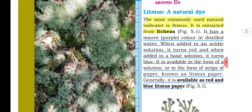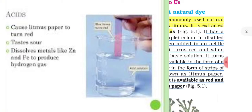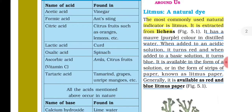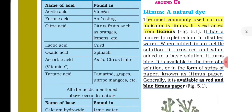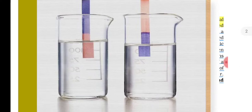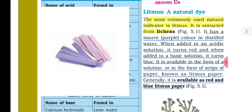When we use litmus paper in a basic solution it turns blue, but when we use it in an acidic solution it turns red — which indicates the substance is acidic. Blue color indicates the solution is basic. Litmus is available in the form of a solution, and also as strips of paper known as litmus paper — red and blue litmus paper.